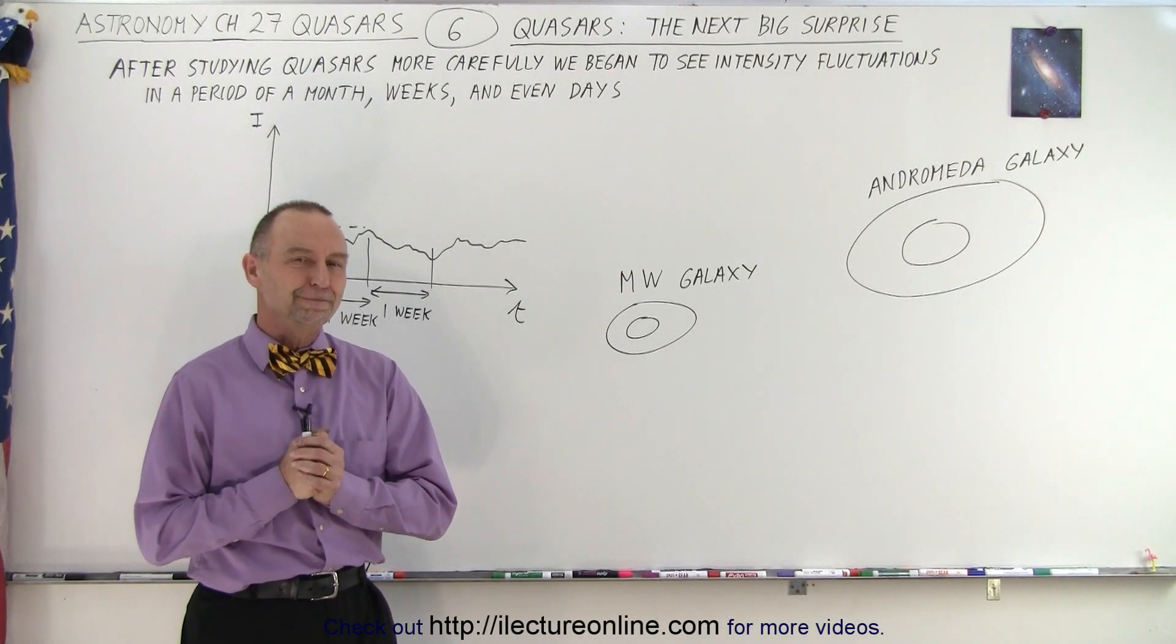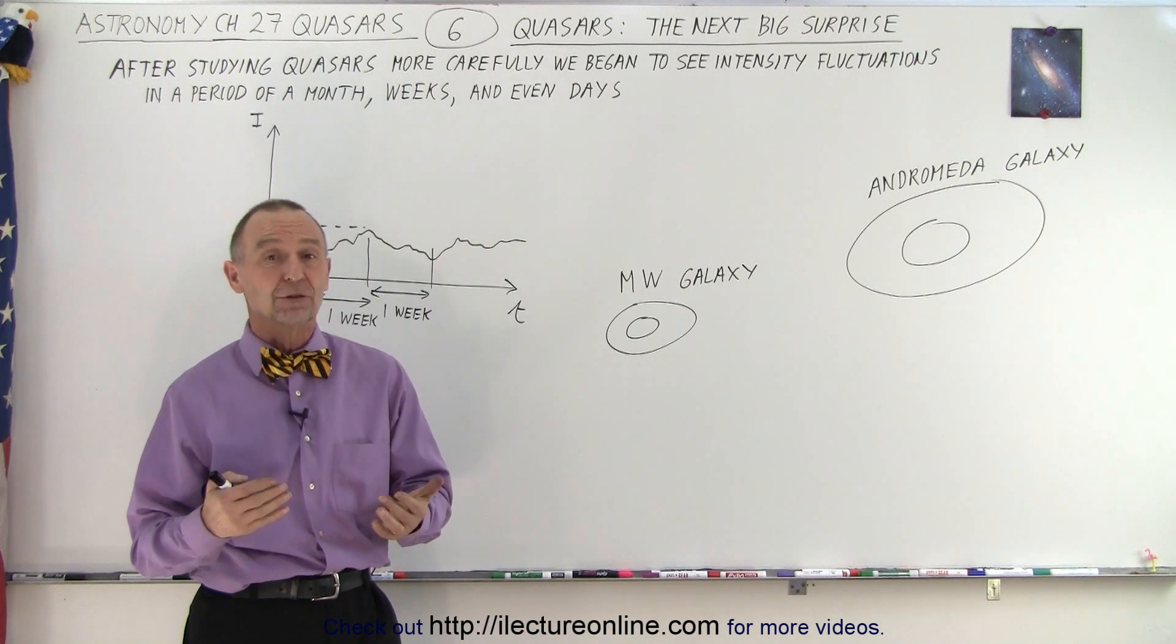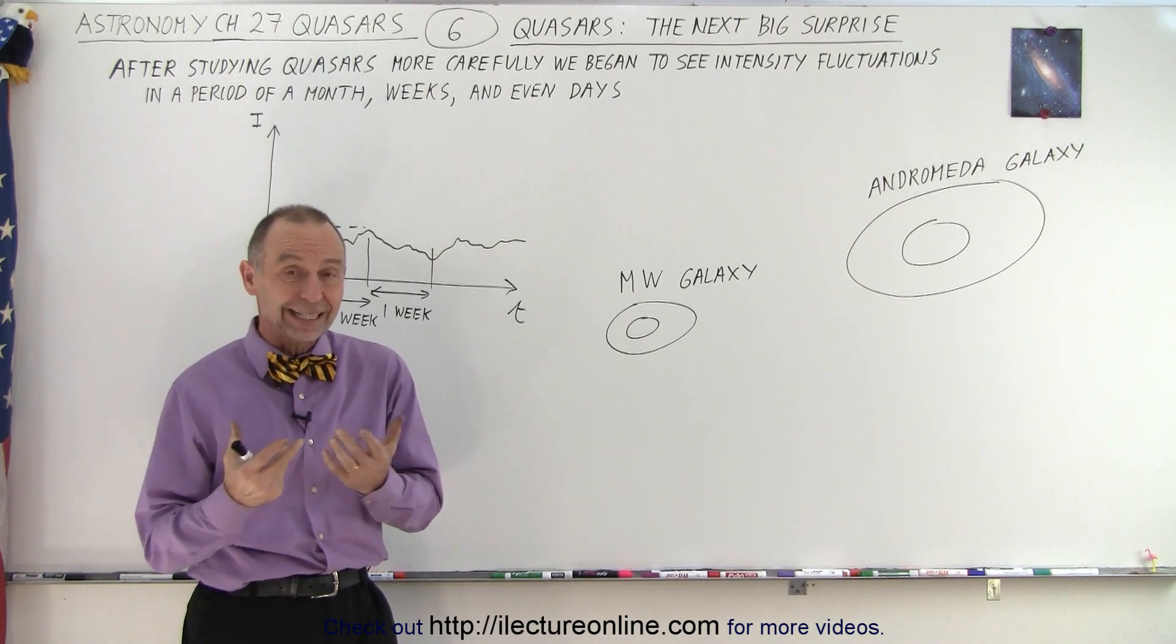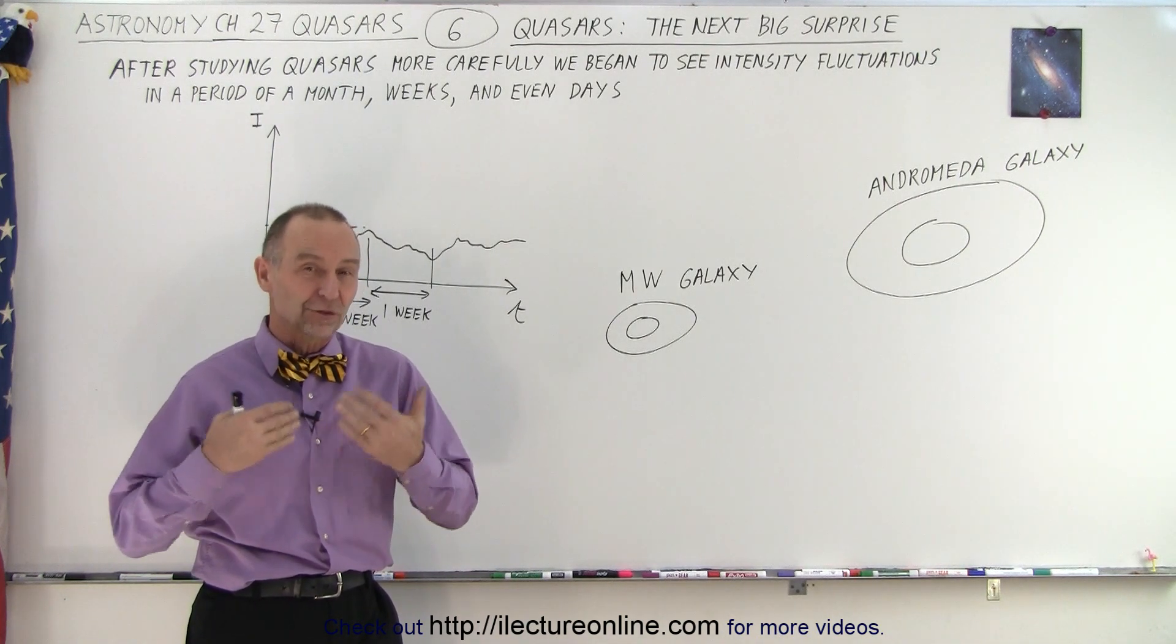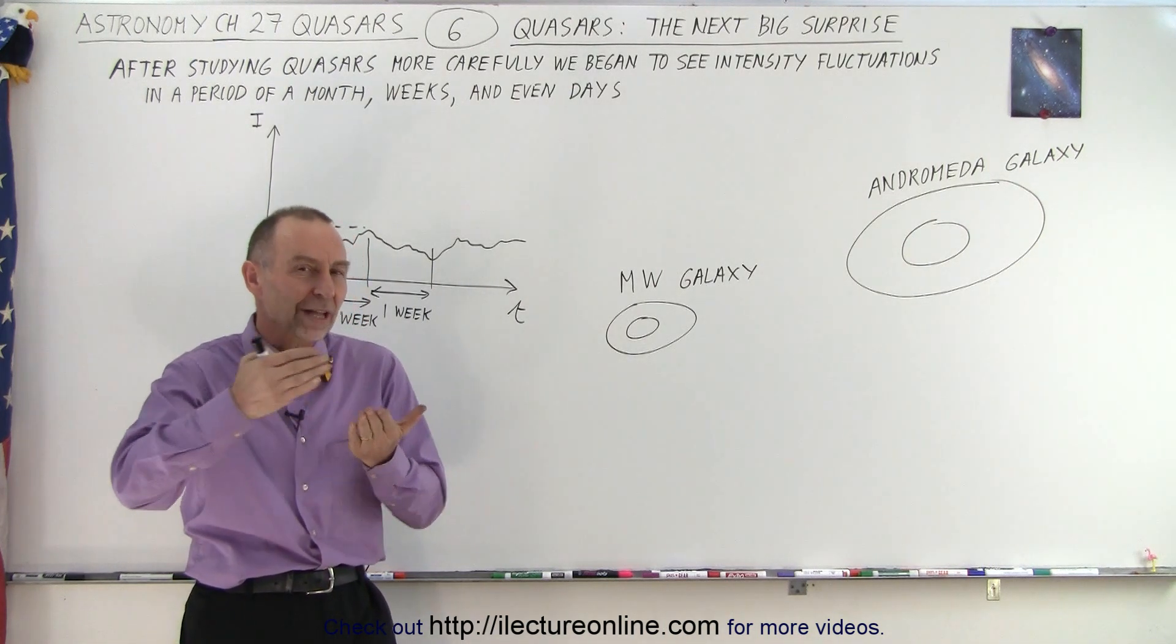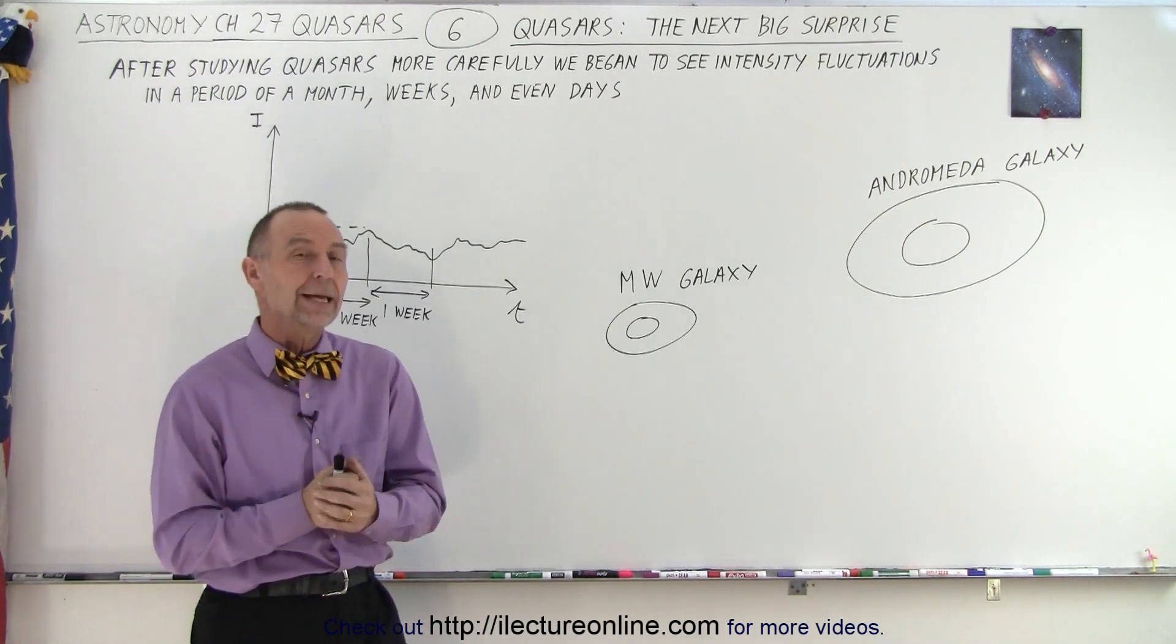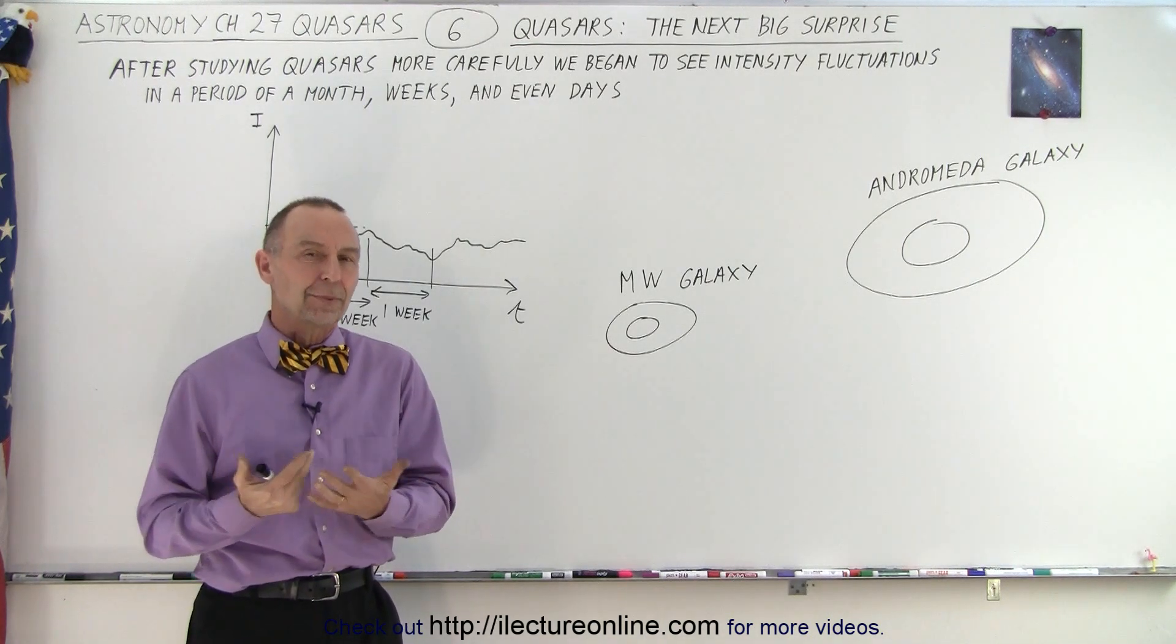Welcome to our lecture online. Now quasars were very mysterious objects for many years. From the moment they were discovered, at least from a perspective, the radio signals that we began to realize, that we began to see from these quasars, then slowly over time began to realize that these were coming from galaxies really far away. The next surprise happened to come along.